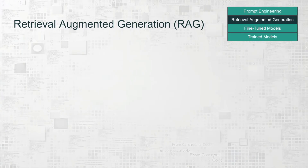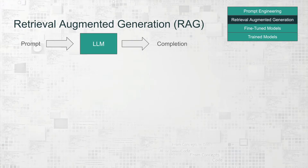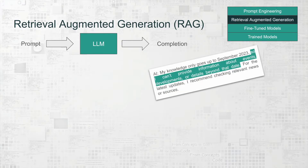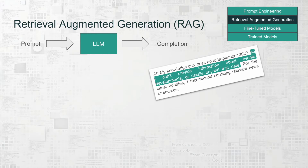The second method we will cover is retrieval augmented generation, or simply RAG. LLMs are trained on general knowledge, which may not be enough when a company needs responses based on specific internal information. They also can't provide updates on recent events or access private company data without help. With newer versions of ChatGPT using online tools to fetch real-time info, that limitation is less obvious today — but RAG is the approach that steps in to handle this kind of problem.